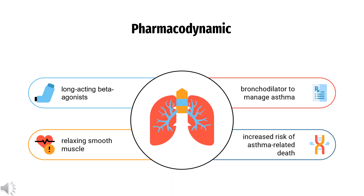Pharmacodynamics: Formoterol works locally in the lungs as a bronchodilator, relaxing smooth muscle and opening up the airways. It possesses both a rapid onset of action, approximately 2–3 minutes, and a long duration of action, up to 12 hours. The use of long-acting beta-agonists such as Formoterol without concomitant inhaled corticosteroids in asthmatic patients should be avoided, as LABA monotherapy has been associated with an increased risk of asthma-related death.